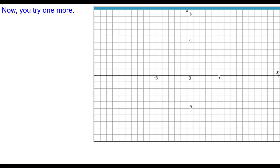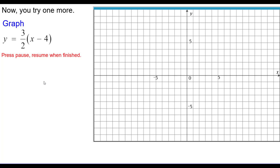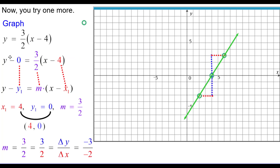Try one more: graph y equals 3 halves times the quantity x minus 4. Rewrite as y minus 0 equals 3 halves times the quantity x minus 4, so y sub 1 is 0, m is 3 halves, and x sub 1 is positive 4. The point is 4 comma 0 — an x-intercept. Use slope 3 halves: up 3 right 2 from there, or down 3 left 2. The three points are collinear — draw the line.